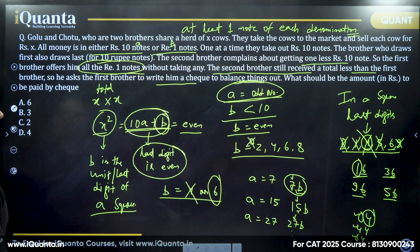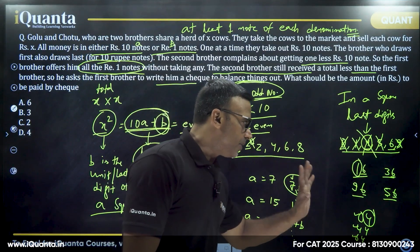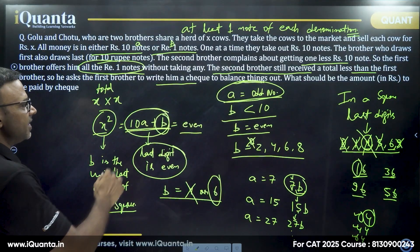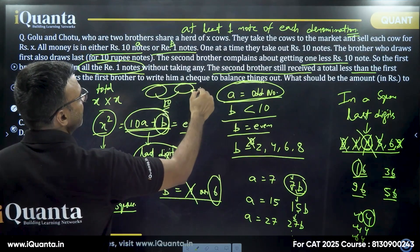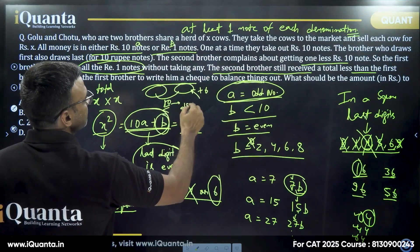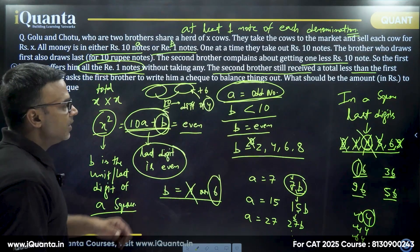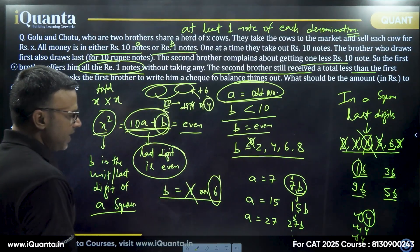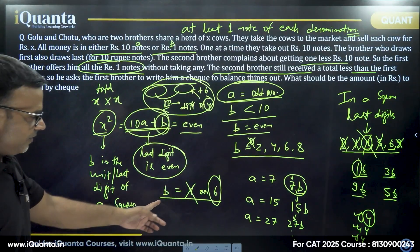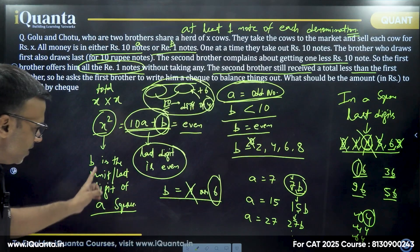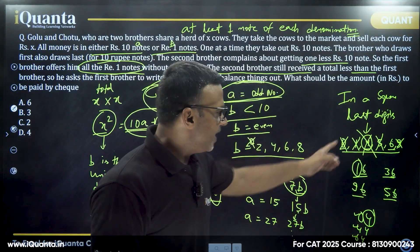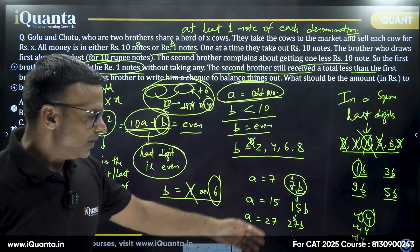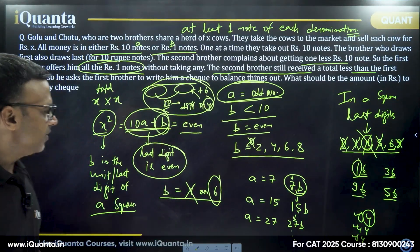So now we know A is an odd number and B is clearly 6 — there is no other possibility. In a square, if the last digit is 6, the tens digit is always an odd number. If the last digit is 4, the tens digit is always even — which contradicts our requirement. So B equal to 6 is confirmed. Therefore X squared equals 10A plus 6, where A is odd.